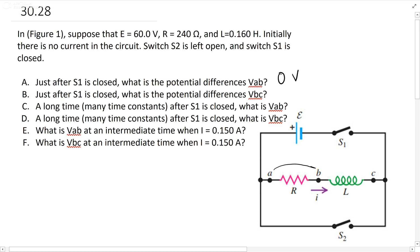And B is just after S1 is closed, what's potential difference VBC? Yep, all potential difference is right here. So 60 volts because that is what our battery EMF is right there. And you know that in series, VEQ basically equals V1 plus V2. So you know these have to add up to 60, so that's 60.